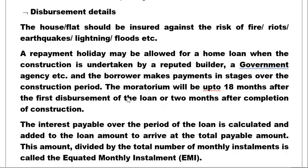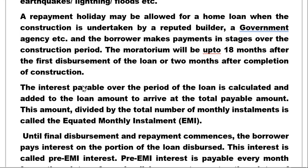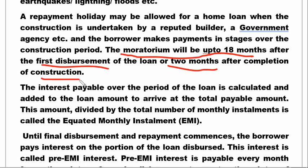Repayment holidays may be allowed for a home loan when construction is undertaken by a reputed builder or government agency and the borrower makes payments in stages over the construction period. This is called the moratorium period — up to 18 months from the first disbursement of the loan, or two months after completion of construction. The moratorium is the period where the customer does not pay any interest or principal.